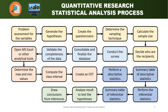Once we validate the completeness of our data, we will create an FDT — a Frequency Distribution Table. Before arriving at the FDT, we first determine the maximum and minimum values in our dataset. From that, we compute the range, the class bin, and the class interval, and then generate the FDT. Using MS Excel, it's pretty easy and straightforward.